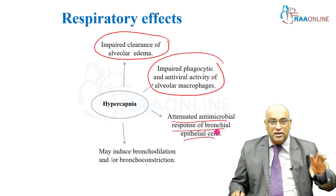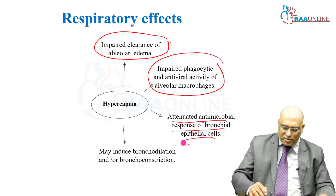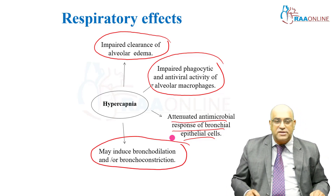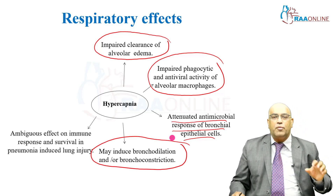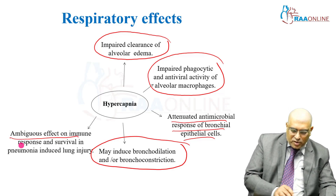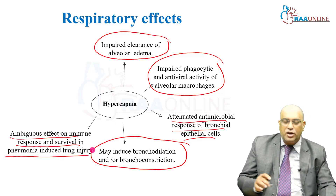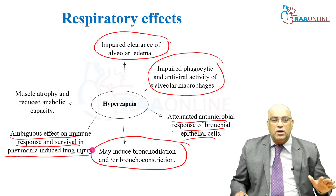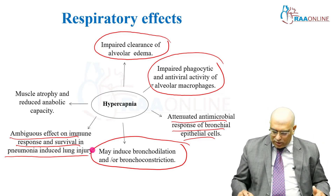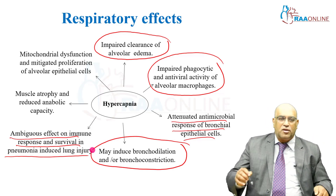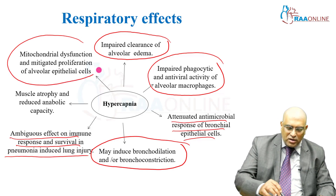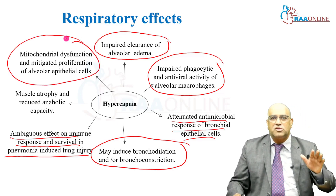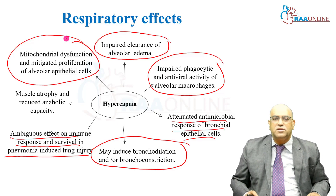Hypercarbia may induce bronchodilatation initially, but at a later stage it most often causes bronchoconstriction. It has an ambiguous effect on immune response and survival in pneumonia-induced lung injury. It can cause muscle atrophy and reduce anabolic capacity. Finally, there is mitochondrial dysfunction and increased proliferation of alveolar epithelial cells.